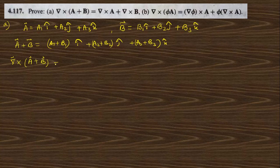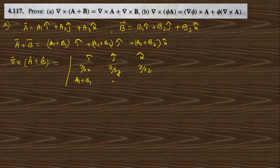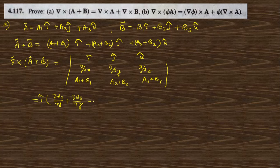Now taking the curl of (a + b), we write it in determinant form: î, ĵ, k̂ in the first row; ∂/∂x, ∂/∂y, ∂/∂z in the second row; and (a1+b1), (a2+b2), (a3+b3) in the third row. The î component gives us (∂a3/∂y + ∂b3/∂y) minus (∂a2/∂z + ∂b2/∂z).